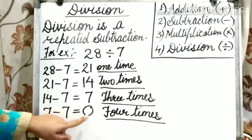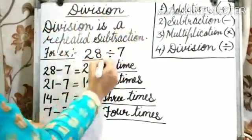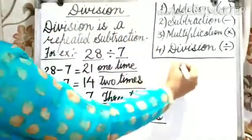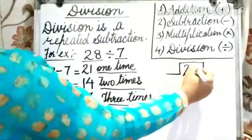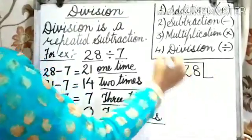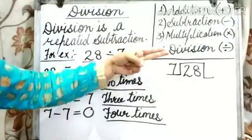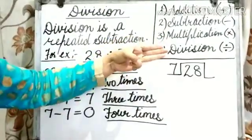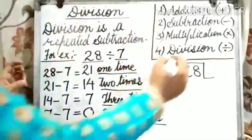Now, we will check the same by doing division. 28 divided by 7. 7 times 1 is 7, 7 times 2 is 14, 7 times 3 is 21, and 7 times 4 is 28.